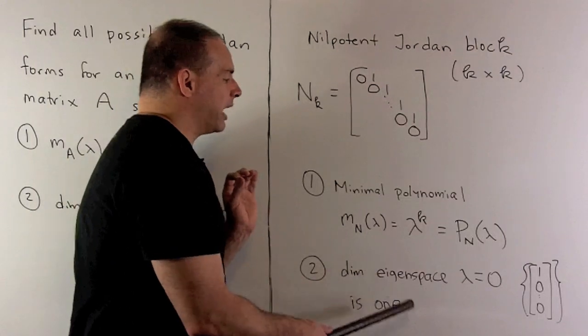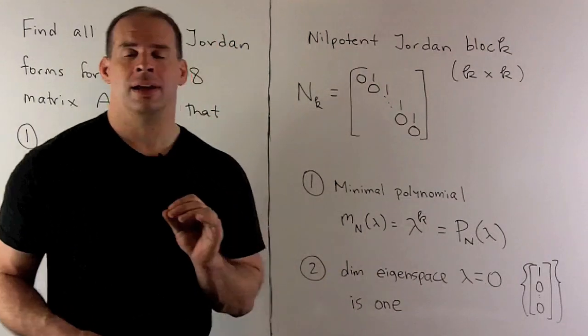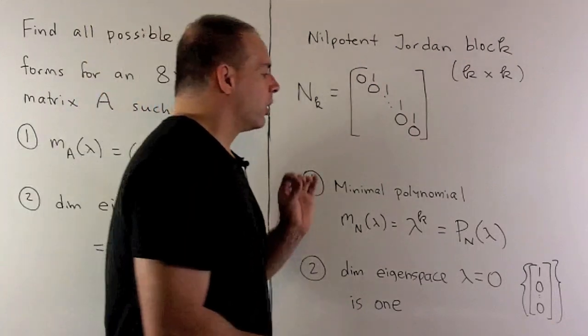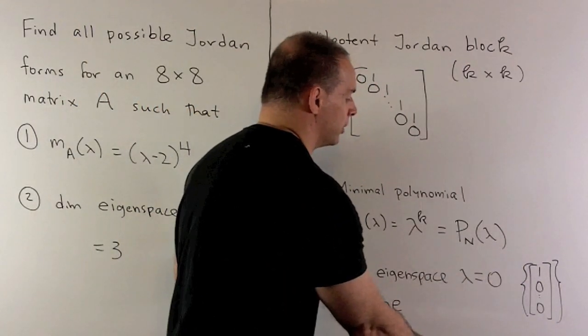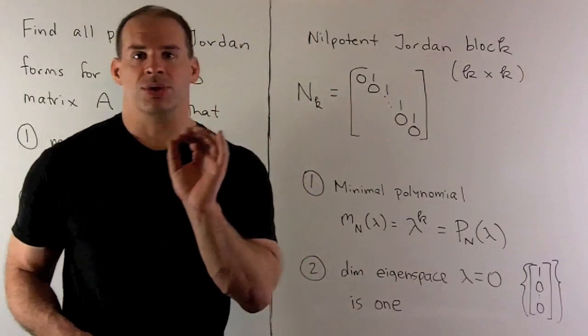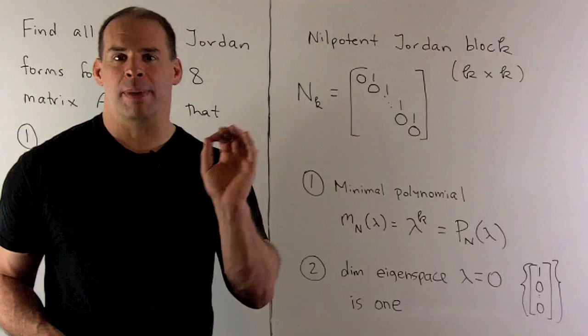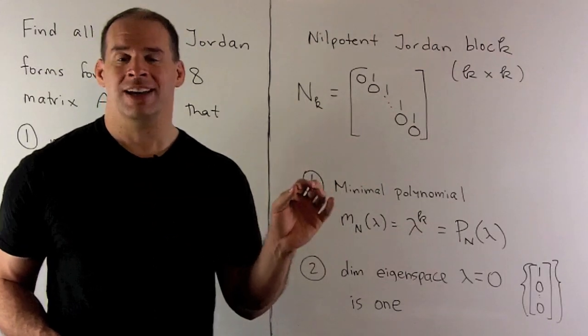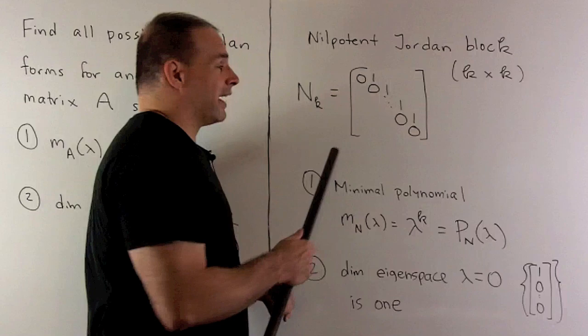Also, we'll have the dimension of eigenspace for eigenvalue zero is equal to one. The eigenspace is spanned by the vector one and then all zeros. The way we'll use this, if we're keeping track of how many Jordan blocks we have, we need only count up the dimension of the eigenspaces, since each block has only one dimension of eigenvectors.